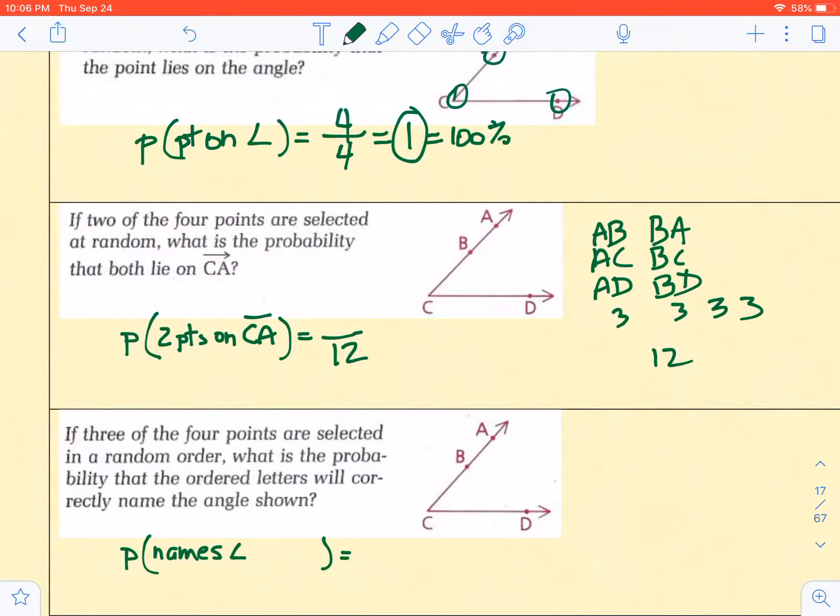If I pick which ones are on CA, well, we see BA, AB, CB, BC, and CA, AC. So that would be six of the 12.